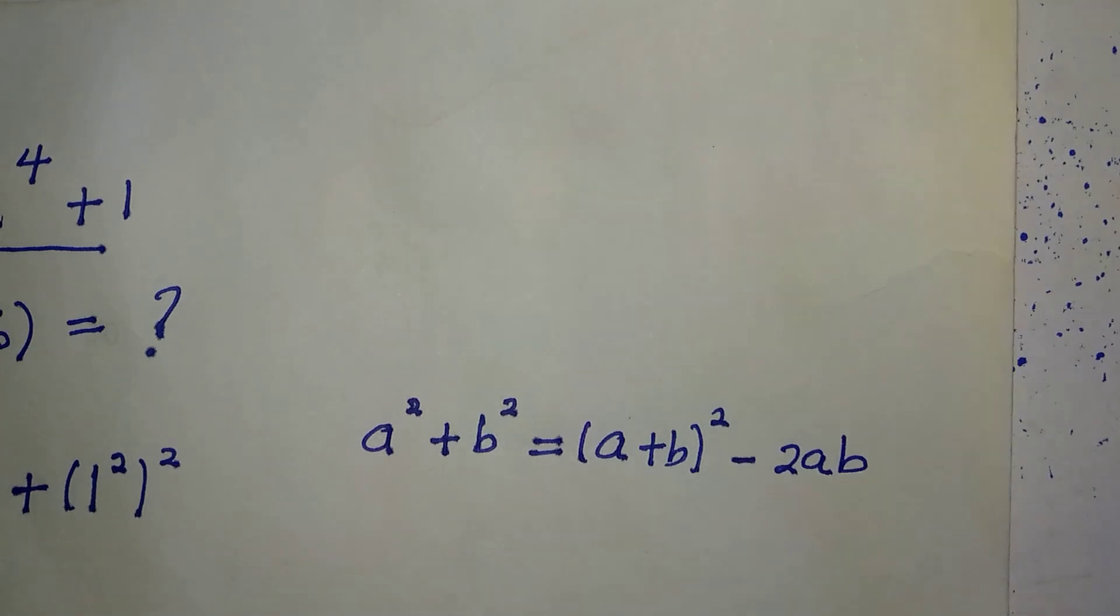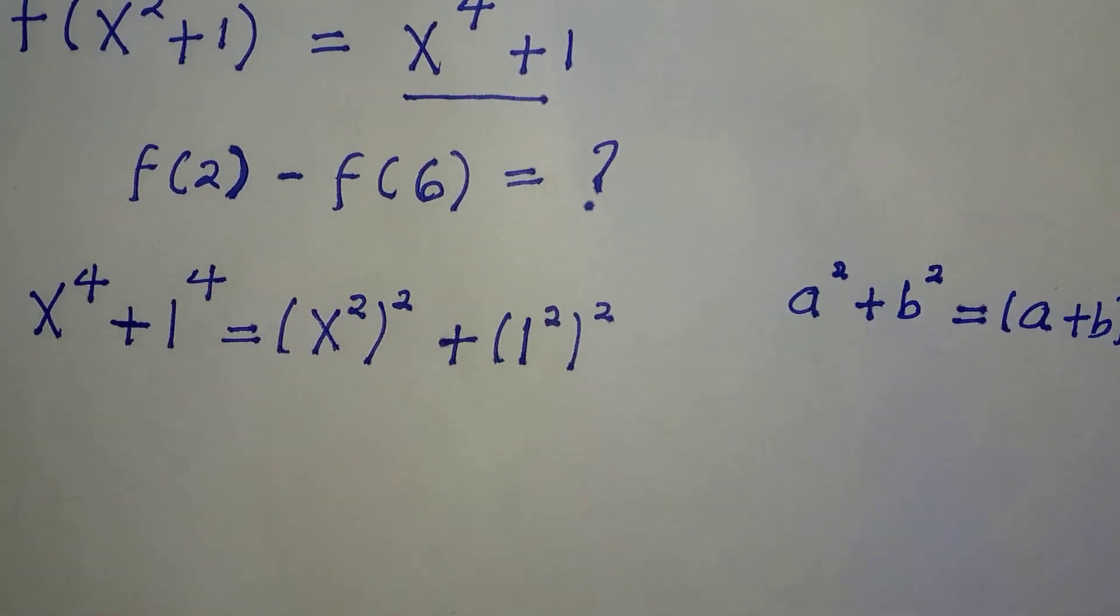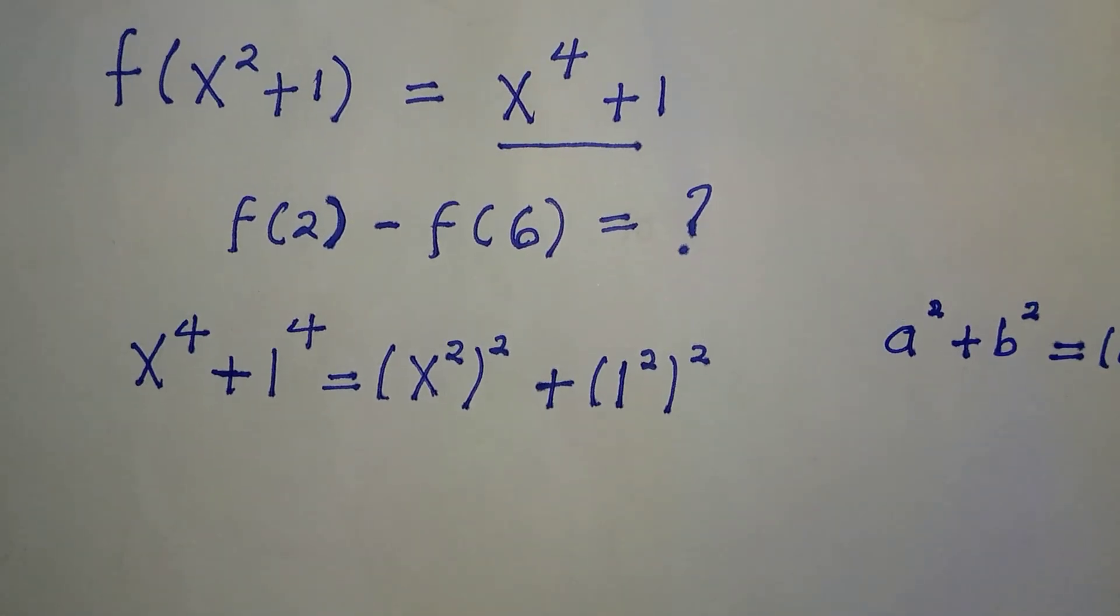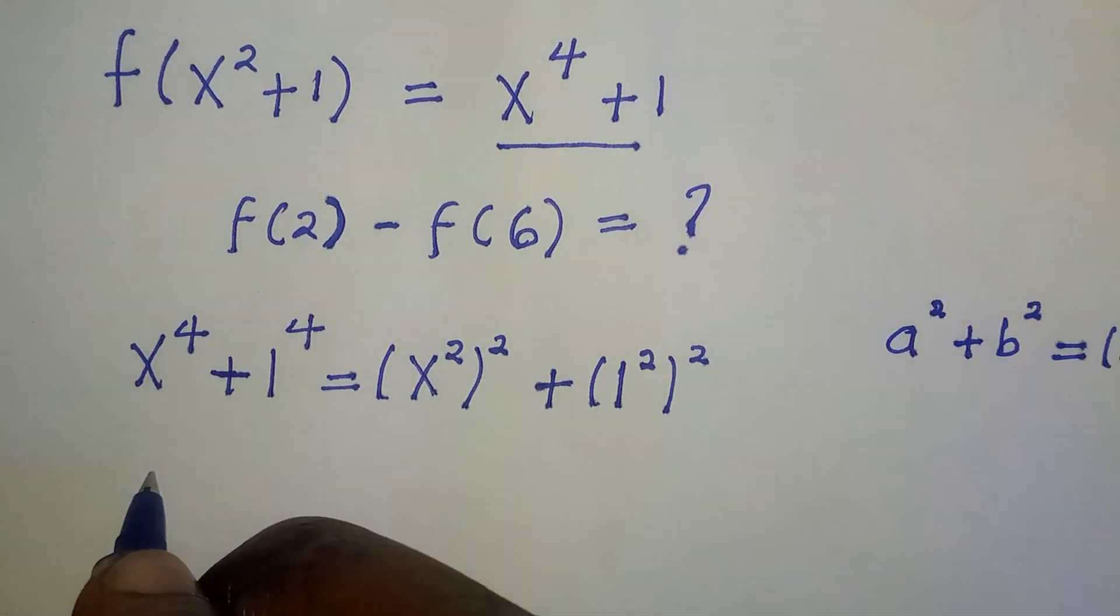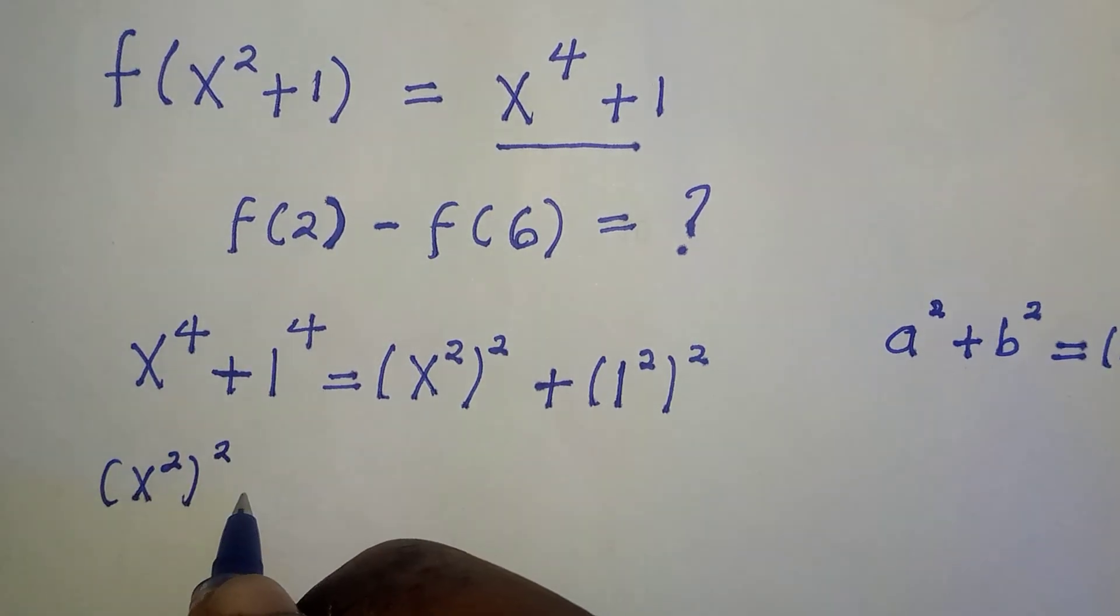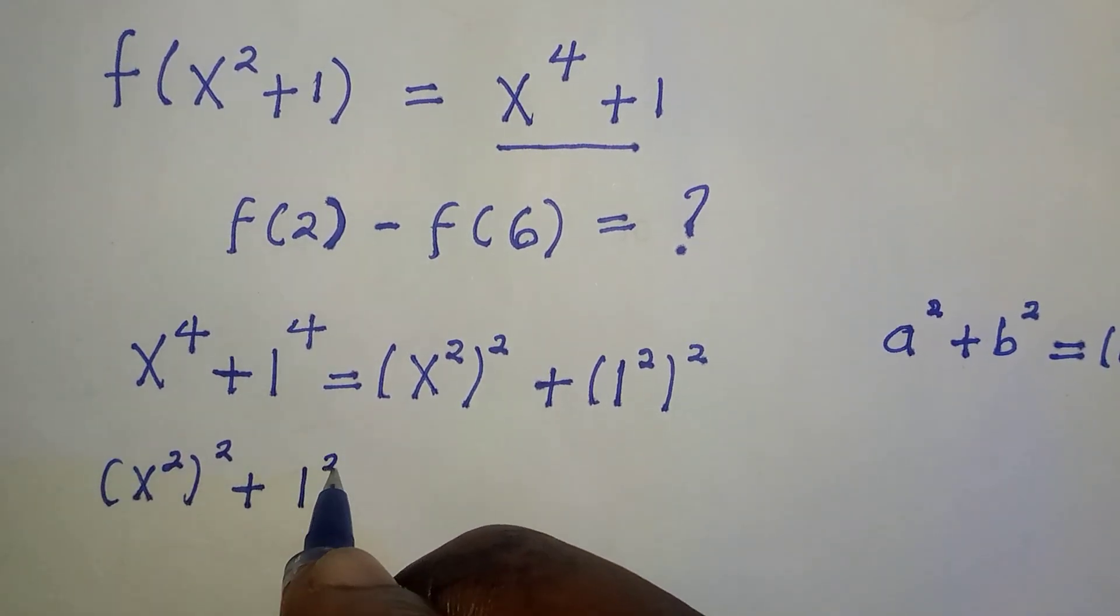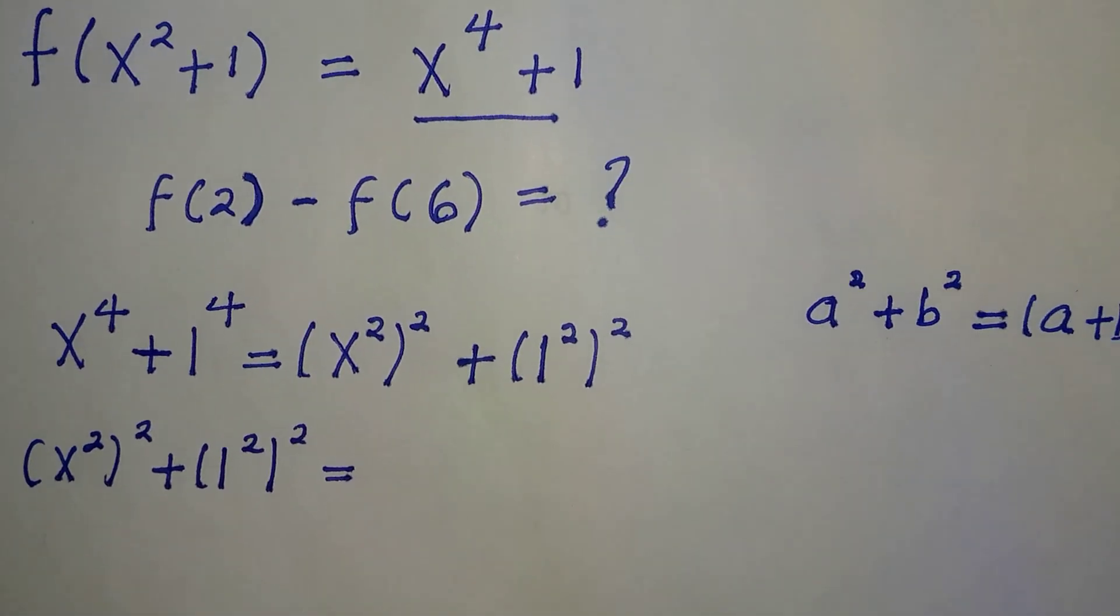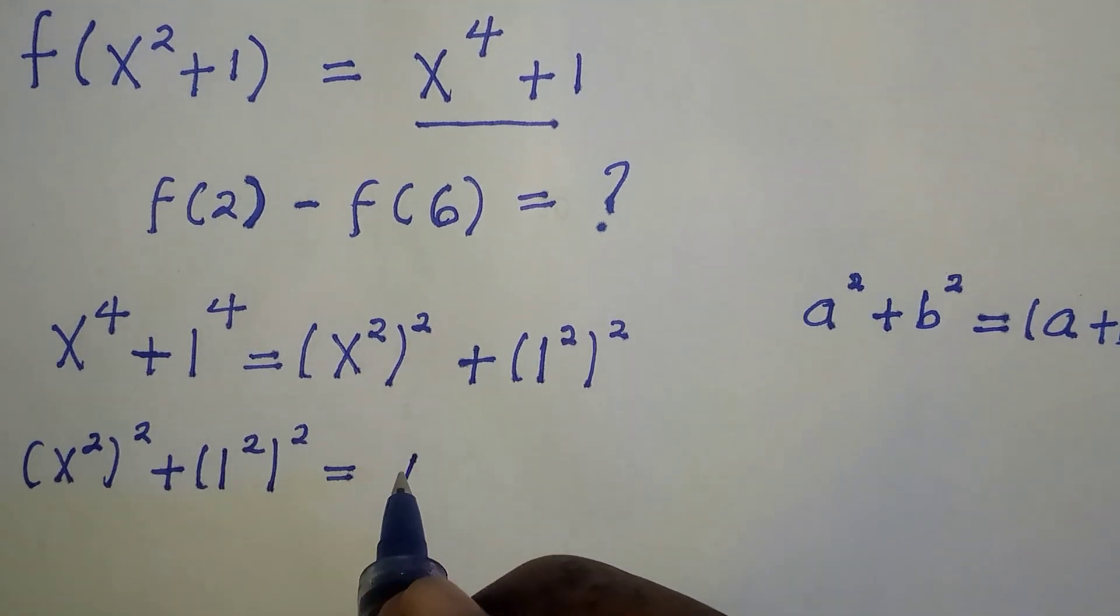So we try to expand this to get the left-hand side. By applying it here, if x² is a and 1² is b, we have (x²)² plus (1²)² equals... So from this identity, x² is a...